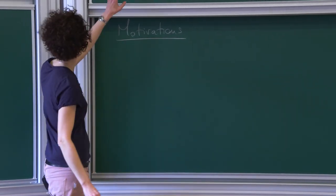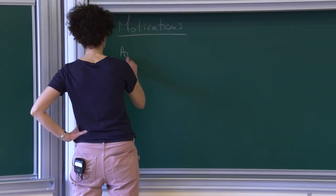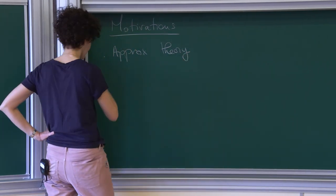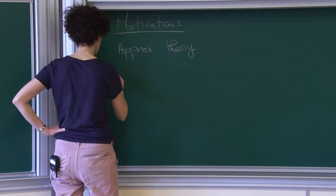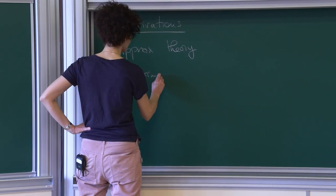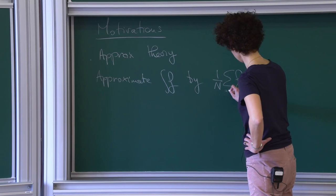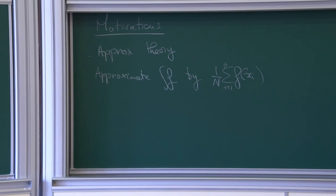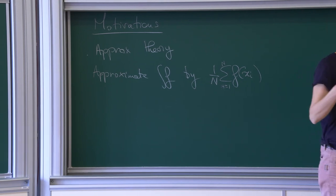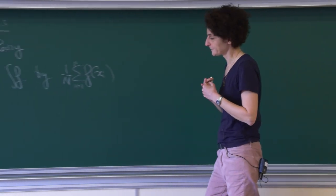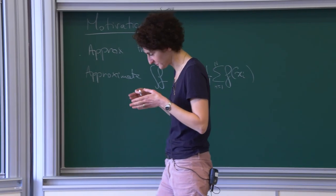Let me now discuss motivations — first ones that only involve the energy, not even the Gibbs measure. One example is approximation theory: you want to distribute points sufficiently regularly so that you can approximate the integral of a function by sampling at those points. If you want the approximation to be accurate irrespective of the function f, you should distribute your points well — for instance on an interval from 0 to 1, you put points regularly.